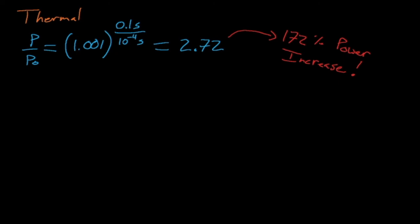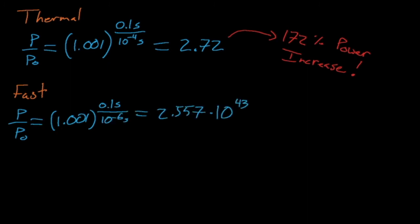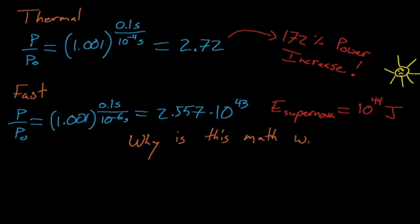For our fast reactor, things are much more dramatic. Because the mean neutron generation time is so much smaller in a fast reactor, it means that our reactor power increases way more before the reactor operator can scram the reactor. In fact, the power will increase by a factor of 2.557 times 10 to the 43. Now, an average supernova releases about 10 to the 44 joules of energy, which means that this kind of transient would transform, for example, UNM's 5-watt AGN reactor into a supernova.